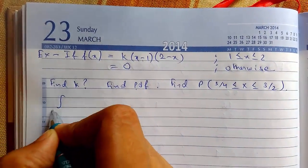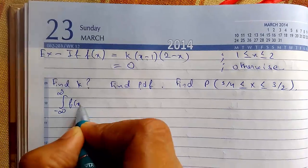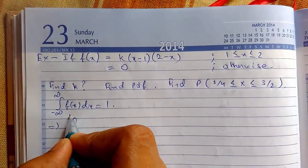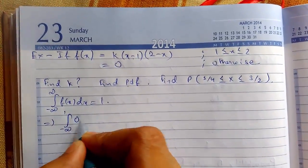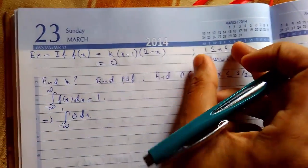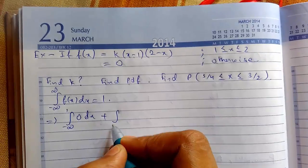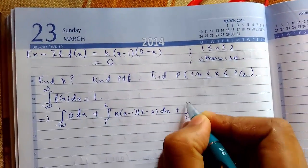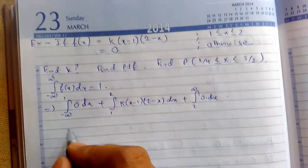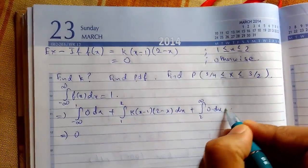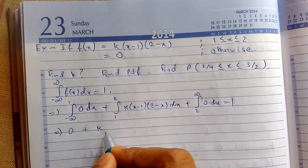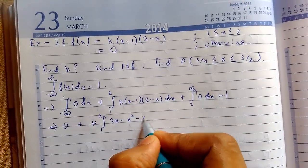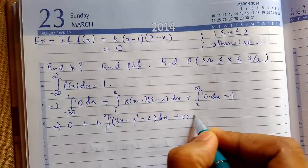So we will use the condition of PDF that was negative infinity to infinity f of x dx equals to one. Now we will just break it into intervals. So it is given from one to two. Anything in this range will be zero because only this range value is this. Now from one to two, this function value will put here. From two to infinity zero dx. So this is equals to zero plus one to two three x minus x square minus two dx and this equals to zero.